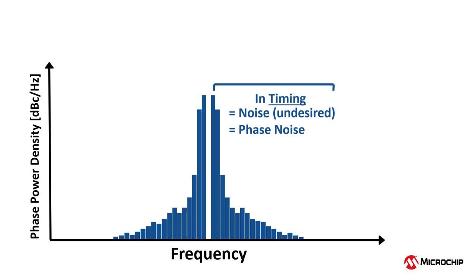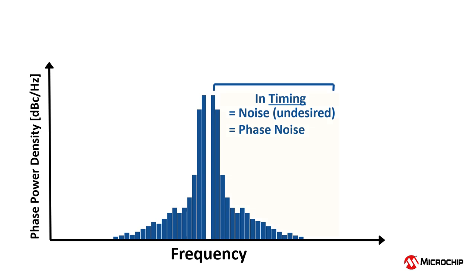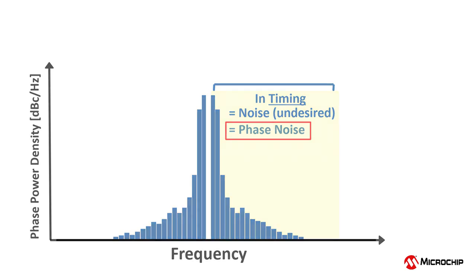If the phase noise is large enough, it can result in data errors. Just like we can look at the spectral power density in the voltage domain, we can also see the spectral power density in the phase domain, which again is what we call phase noise. That is the topic of the next video.